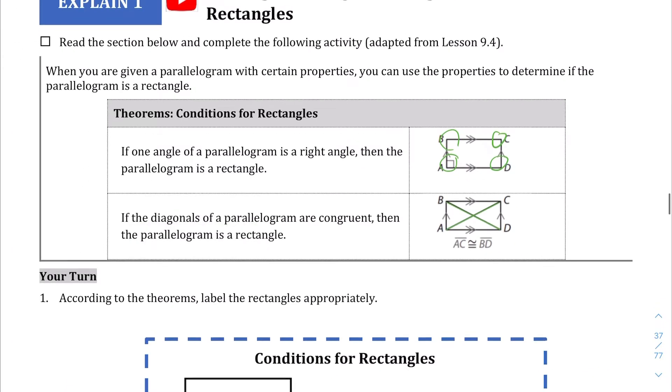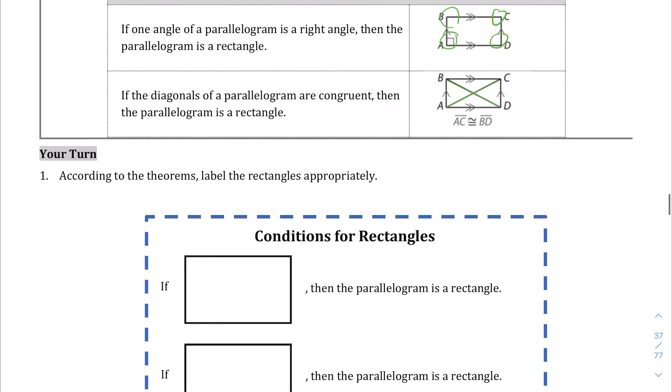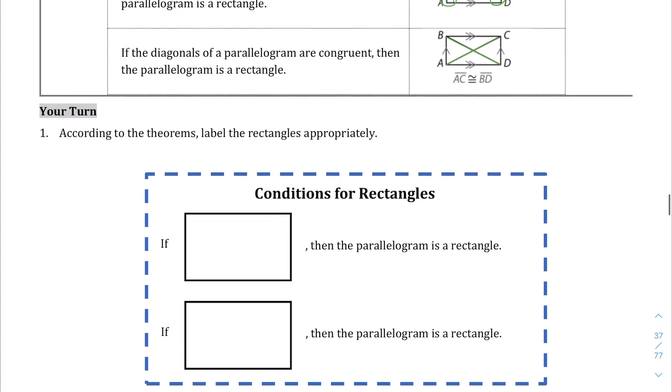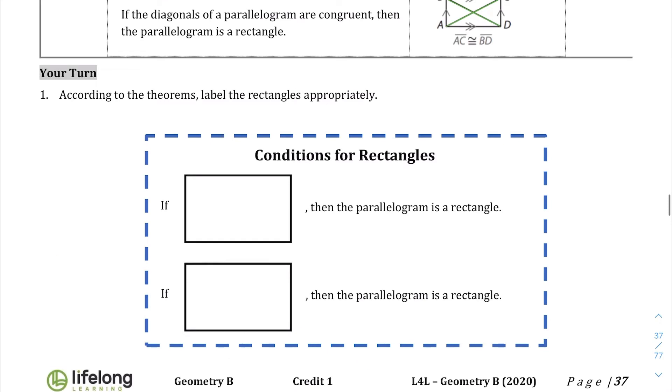So those are the two things we're going to be covering in this particular lesson. And so you're asked to label the rectangles appropriately. If we were to draw the rectangle here, all you have to say is if one of the corners is a right angle and you have a parallelogram, by the way, then the parallelogram is a rectangle.